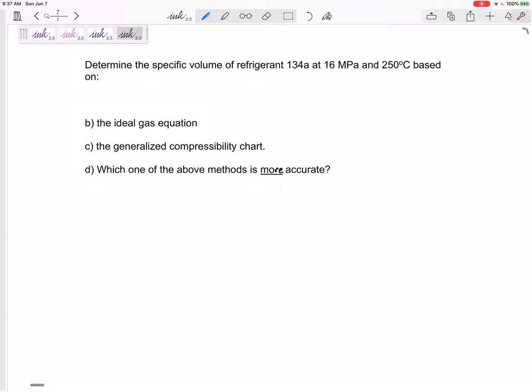So be ready and able to do part A looking up these values on the property tables. The property tables are the most accurate. But anyway, this one we're going to look at the ideal gas equation, and then part C the ideal gas equation with the compressibility factor.